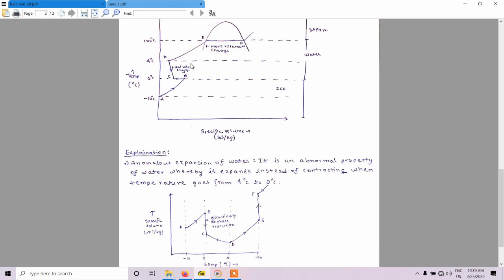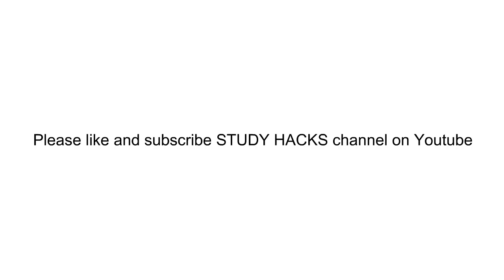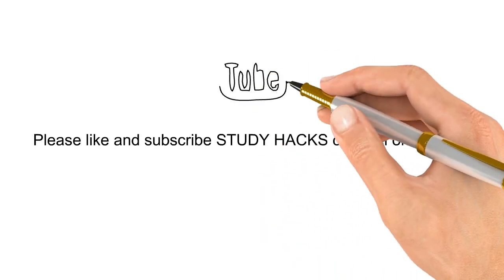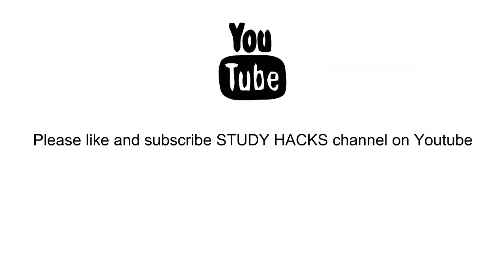The question also asks why BC is small and EF is large. It is because there is less volume change when ice changes into water, but a much larger volume change when water is converted into steam. For more such videos, please like and subscribe to Study Hacks channel on YouTube.